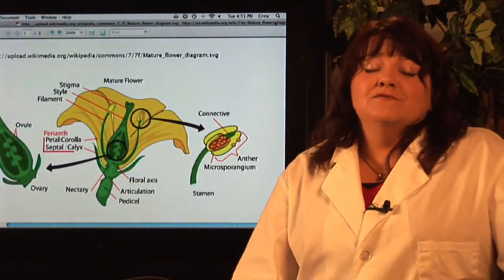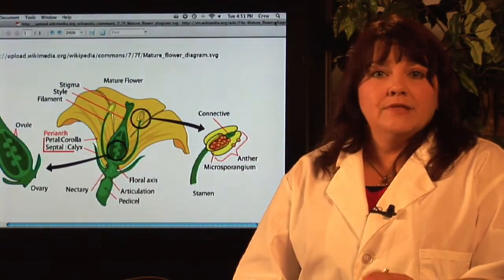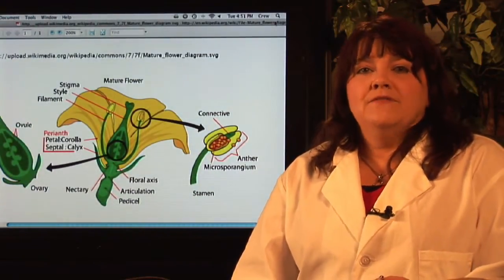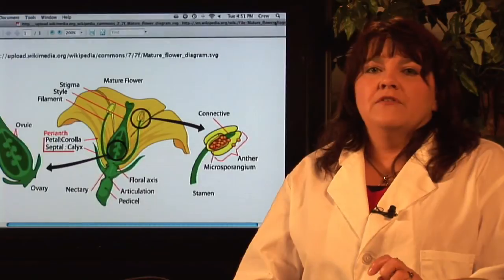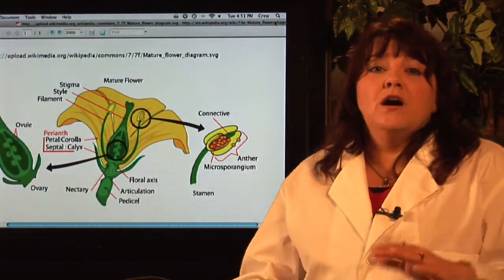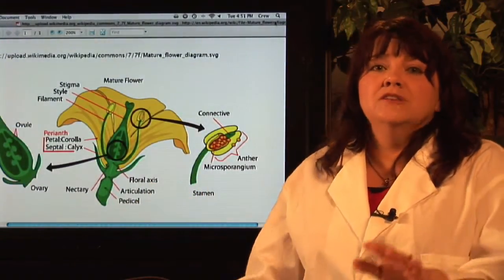When scientists and farmers were first figuring out how to cross different species of plants, they would in fruit trees do something called grafting. They'd cut the branch off of a tangerine tree and graft it to an orange tree, and the tree would produce this cross between an orange and a tangerine called a tangelo.